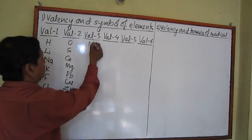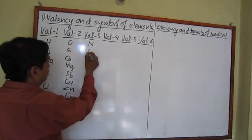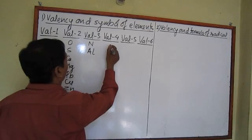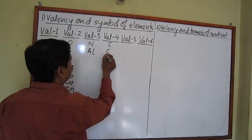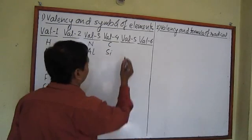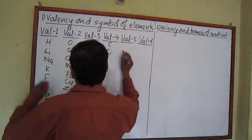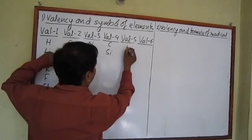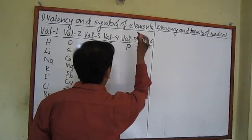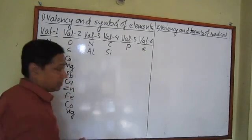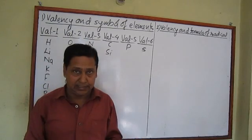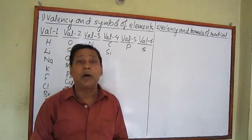Valency three: nitrogen and aluminium have valency three. Valency four: carbon and silicon have valency four. Valency five: phosphorus has valency five. Valency six: sulfur can also exhibit valency six.